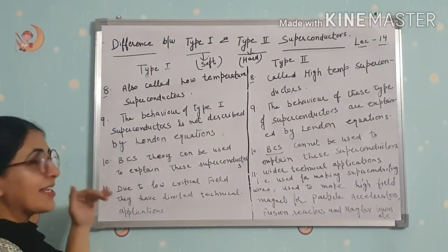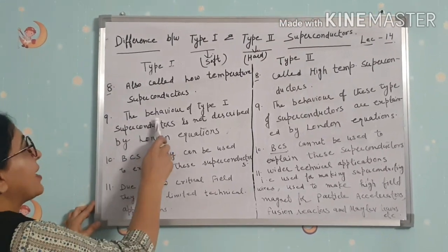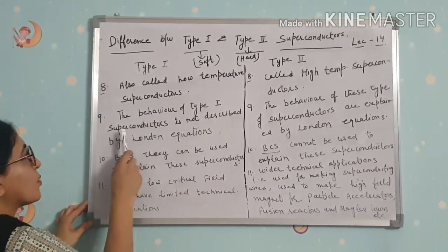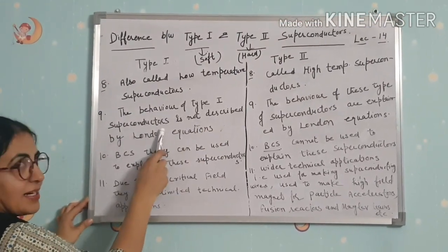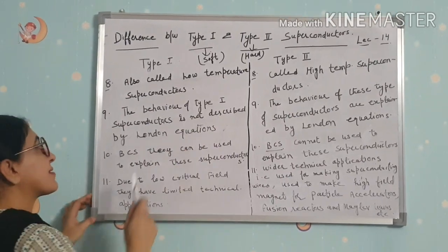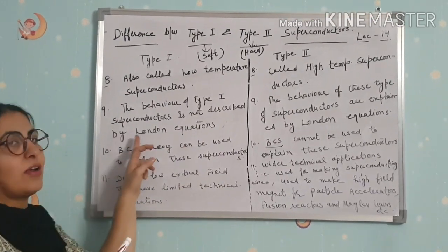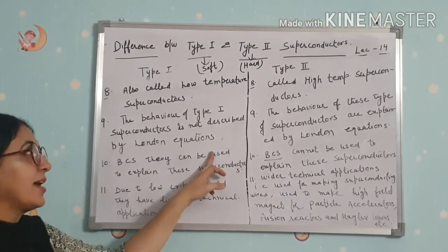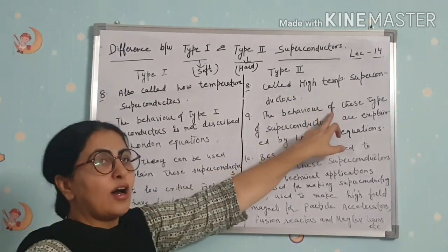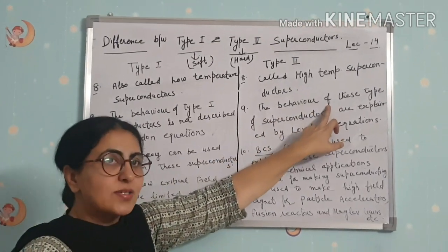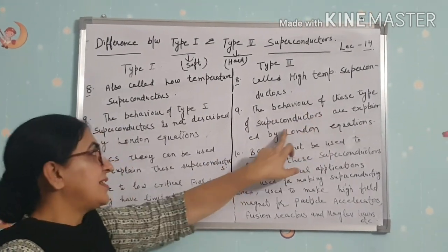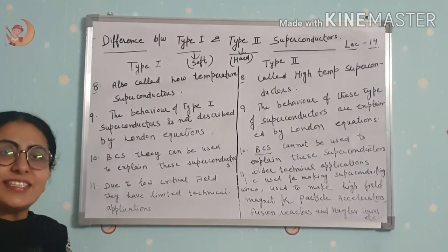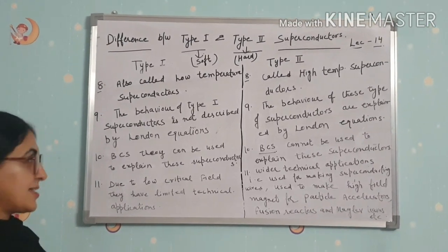Ninth difference: the behavior of Type 1 superconductors is not described by London's equations, whereas the behavior of Type 2 (hard) superconductors is explained by London's equations.